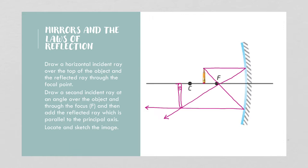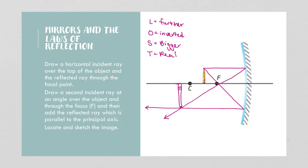Now we'll talk about the image characteristics. When the object is beyond the focal point, the location will be further away than the object. The orientation will be inverted, or upside down. The size is bigger. And the type is real, which means we didn't have to locate the image behind the mirror or extend the light rays behind to find where they crossed.